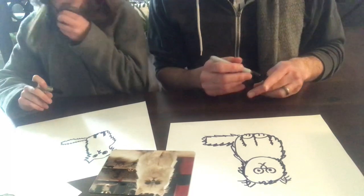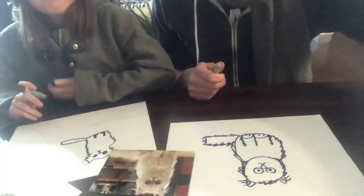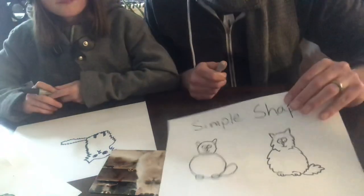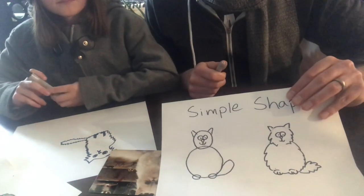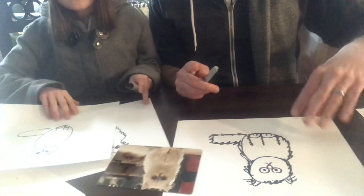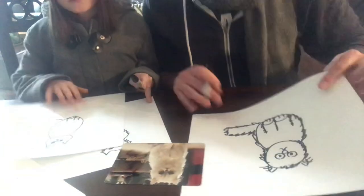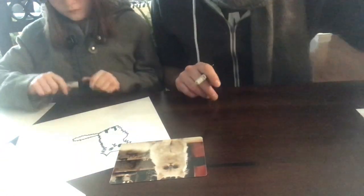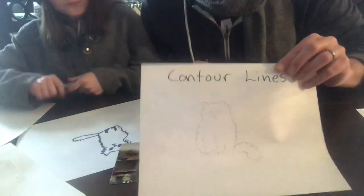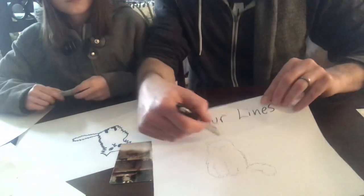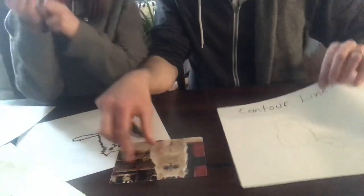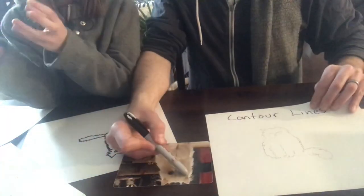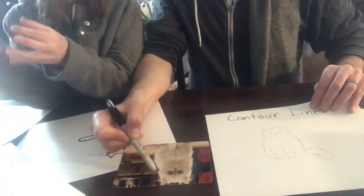So that was just drawing with simple shapes right there. The next way we're gonna do it — I'm not very good at this way, but Kalo's really good at this — we're gonna practice what we call contour lines. Contour lines is when you kind of look at the outside edge of it and you can kind of draw really quickly the outside lines of the animal.